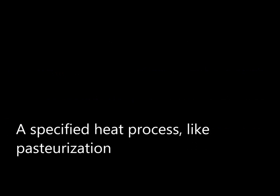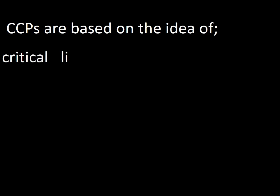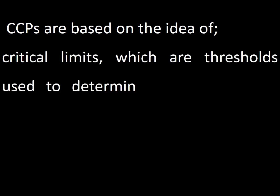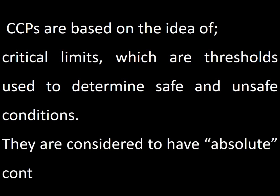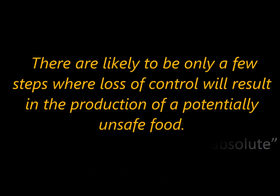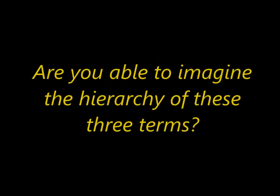Examples of CCPs include a specified heat process like pasteurization, and refrigeration of pre-cooked foods. CCPs are based on the idea of critical limits, which are thresholds used to determine safe and unsafe conditions. They are considered to have absolute control over the hazard. There are likely to be only a few steps where loss of control will result in the production of a potentially unsafe food. All CCPs require control measures, monitoring procedures, corrective actions, responsibilities, and records. In addition, CCPs require that measurable critical limits be set.